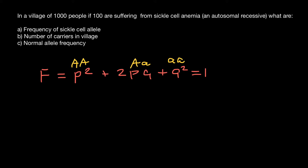In this population we have just two alleles: dominant allele A, which is normal, and recessive allele a, which in a homozygous recessive state produces this genetic disorder. We have only two alleles in this population — allele p and q — and according to the formula, p plus q equals one. In our formula, p stands for the dominant allele A, and q stands for the recessive allele a.